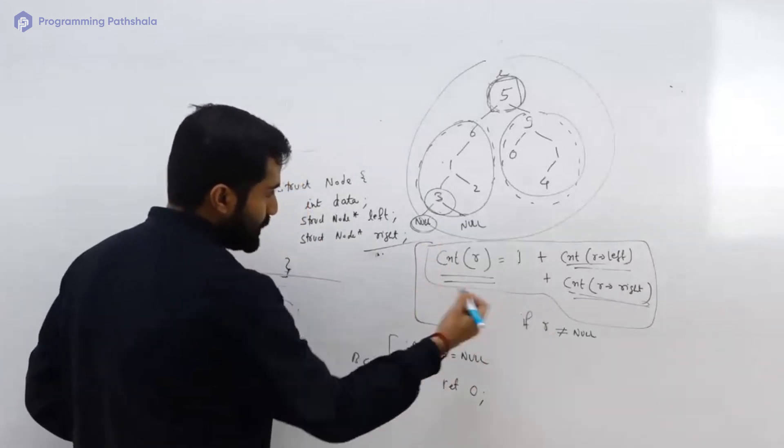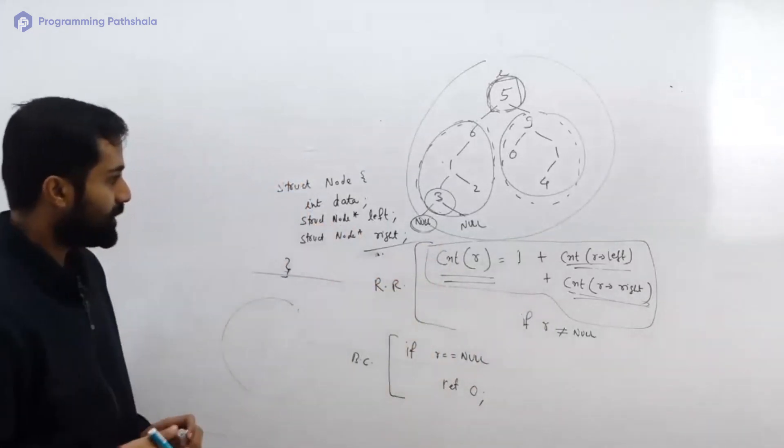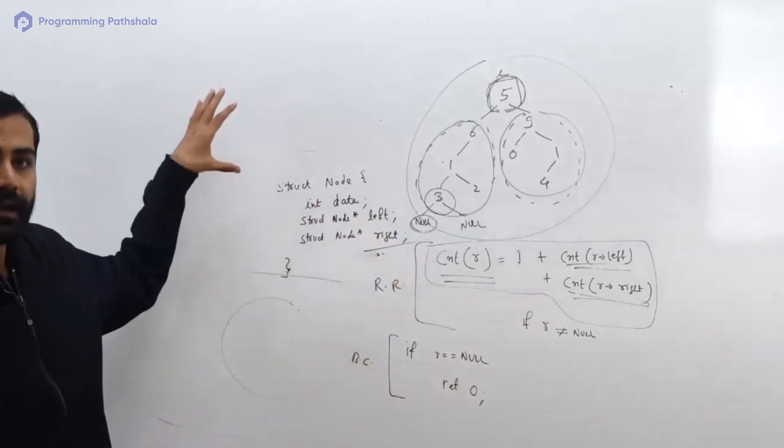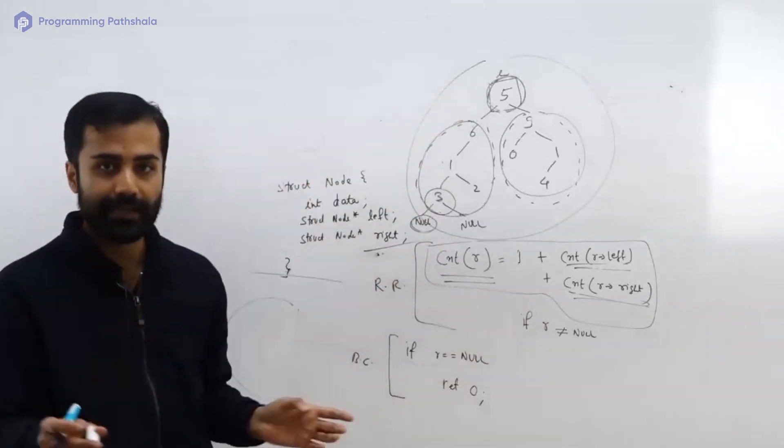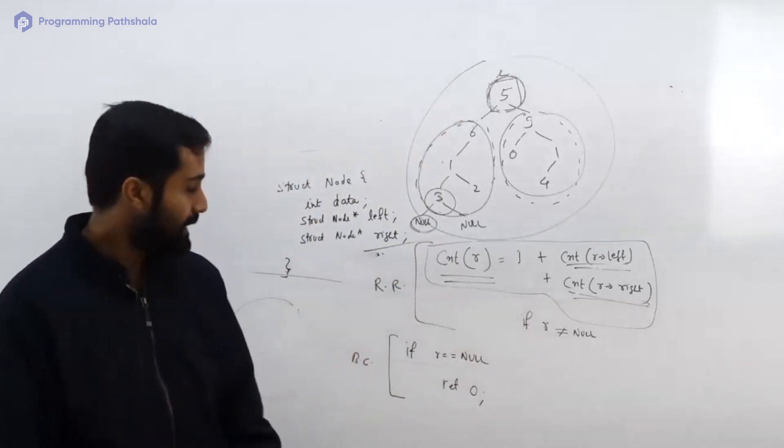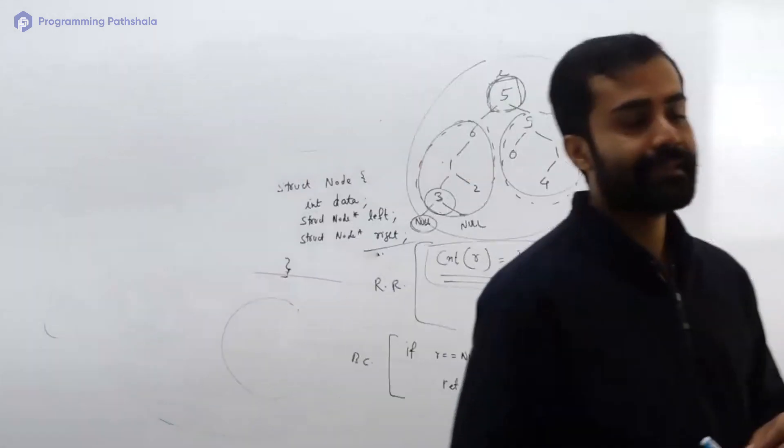And this is your regular case which I can call as your recurrence relation. So these two things you have to plug in your function and then call that function for the root of your entire tree, and then your job will be done. Does it make sense why this base case exists?